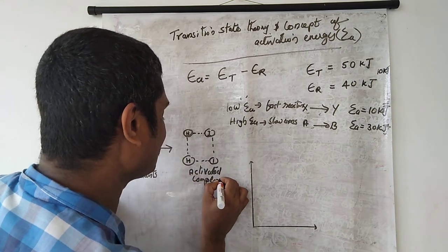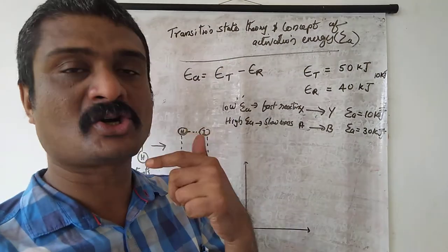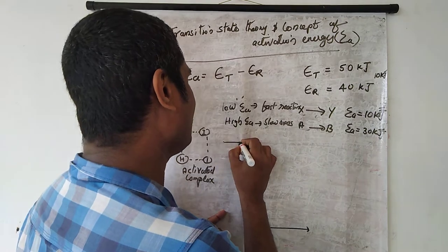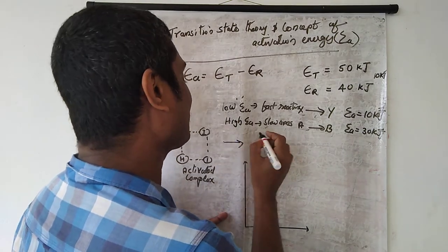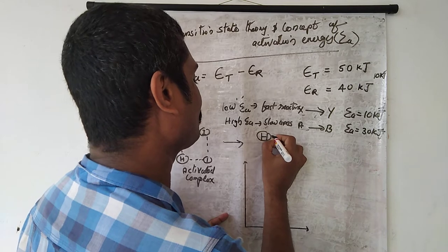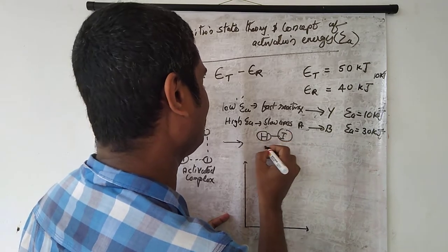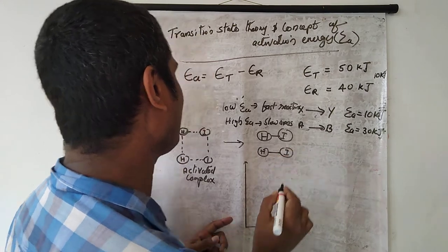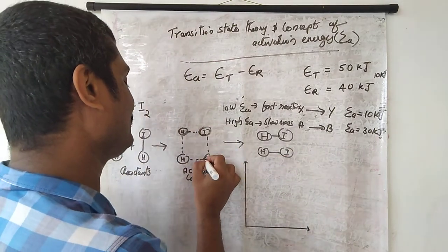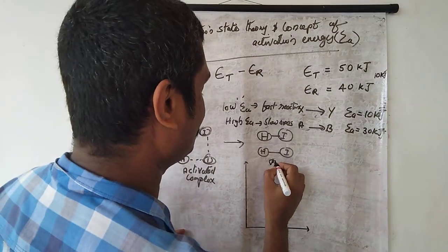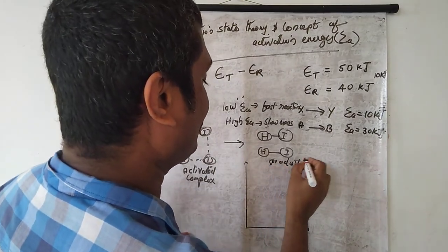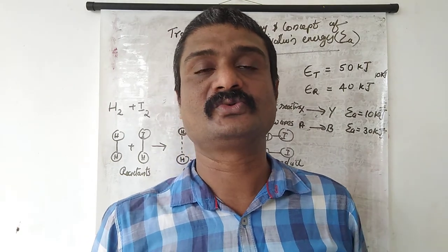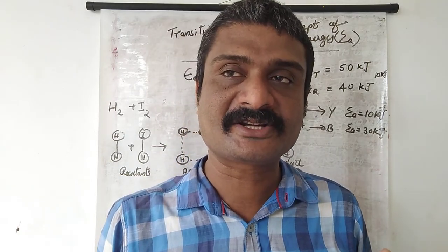This activated complex is highly unstable and has a very short lifetime. It is immediately converted to products — in this case, two molecules of hydrogen iodide (HI). The reactants do not directly change to products; they first pass through the activated complex stage.